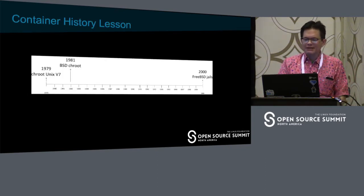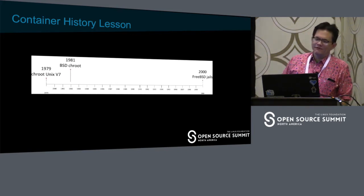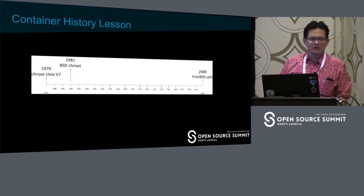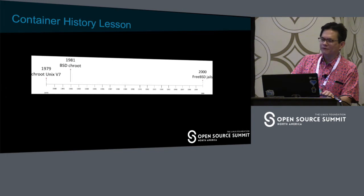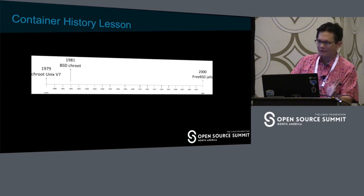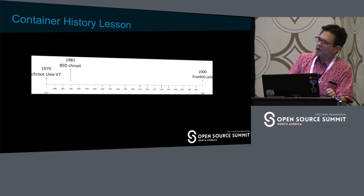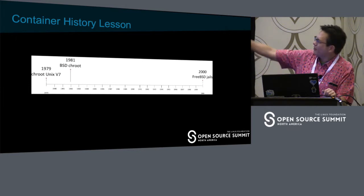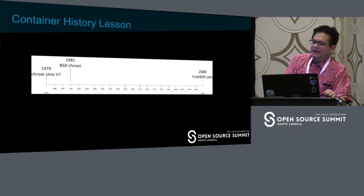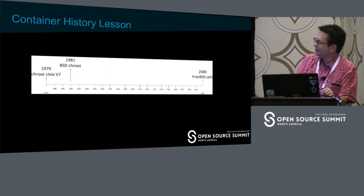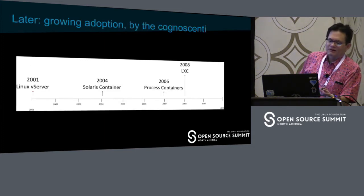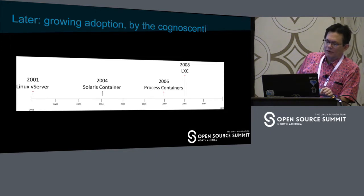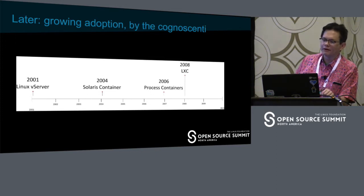We'll start with a history lesson on containers. Some of these dates vary — plus or minus a year — depending on when the first commit was made versus when it became available to the public. The point is that containers aren't really new. You can trace them all the way back to 1979 and the old AT&T Unix v7. Containers moved into the first decade of the 2000s. Google released process containers, which later became packaged into the Linux kernel as control groups, also known as cgroups.